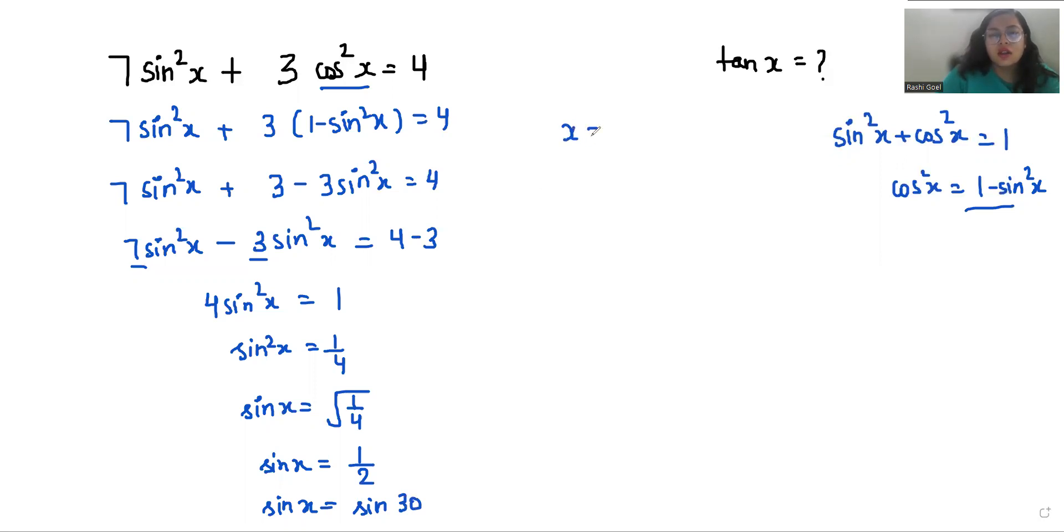So the value of x is 30° in this case. Now we have to find the value of tan x. So tan 30° equals, according to the trigonometry table, 1/√3.